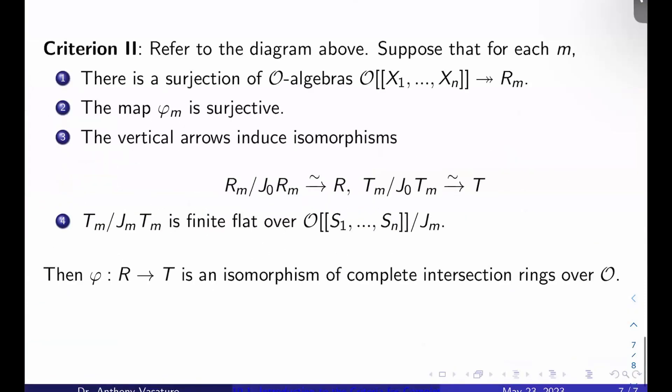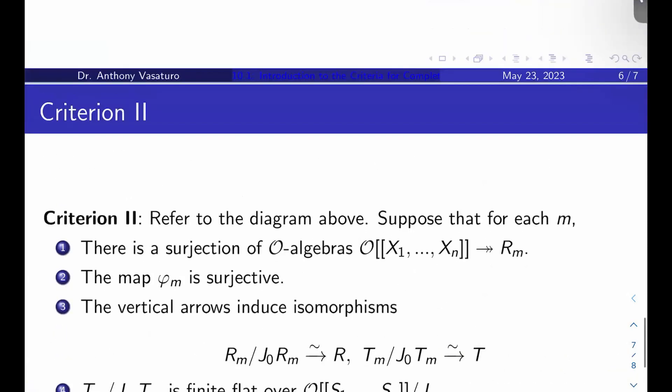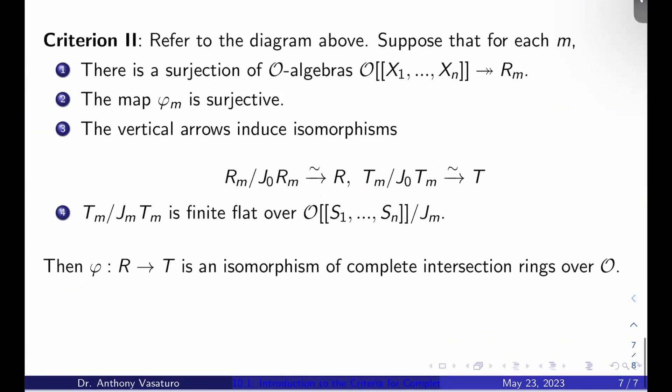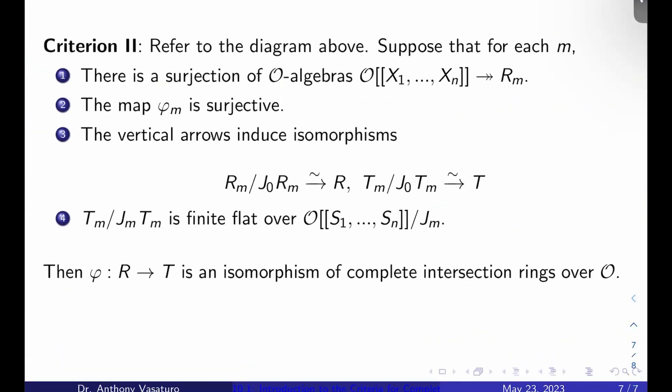So here's criterion two. Refer to the diagram above that I just got done talking about. And suppose that for each m, there is a surjection of O-algebras from O double bracket X_1 through X_n mod J_m, and there's a surjective map down to R_m for each m. Suppose also that φ_m is surjective. We like surjective arrows when we're dealing with this stuff here.